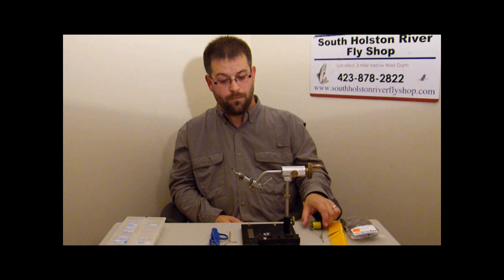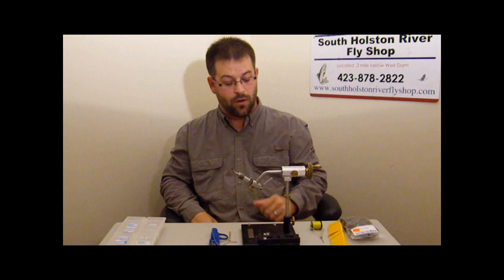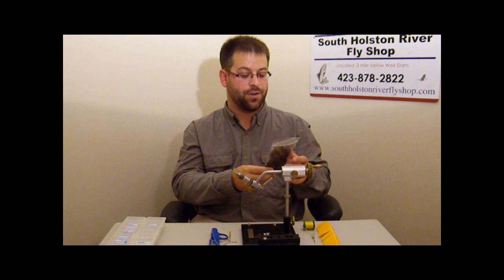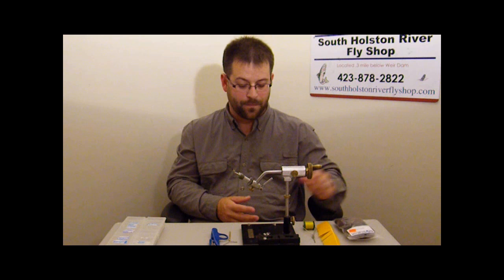We're going to be using a TMC100 in a size 18. We're also going to be using ADOT yellow unithread, a sulfur orange biot, and Trout Hunter CDC natural dark dun for the wing. Let's get to tying.